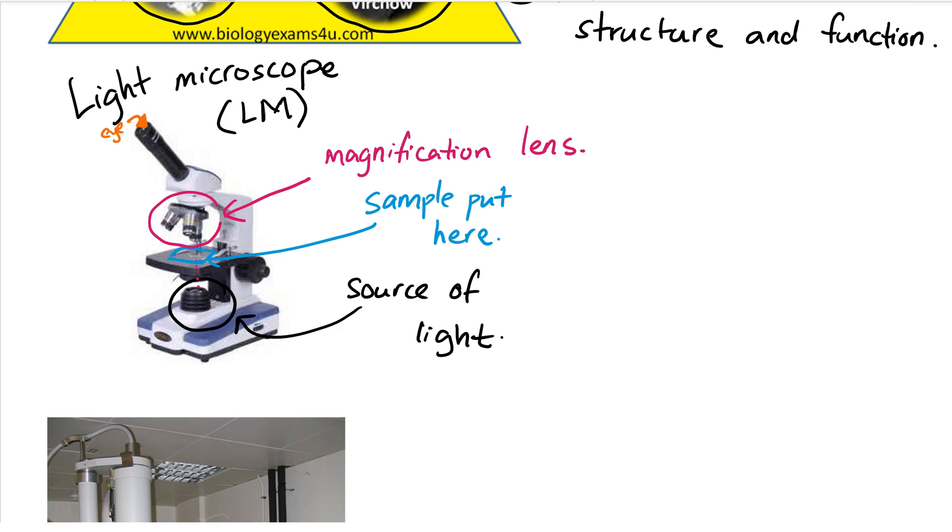Magnified just means that you can increase the size. Light microscopes can increase your sample up to a thousand times, so you can see samples that are up to a thousand times bigger. Magnification is what we mean by the degree of enlargement - how big you can make something.